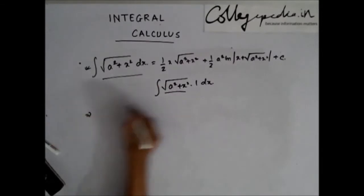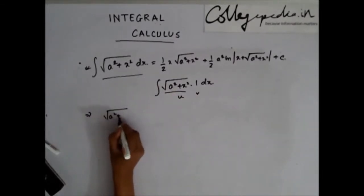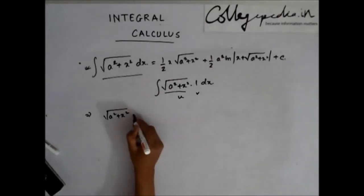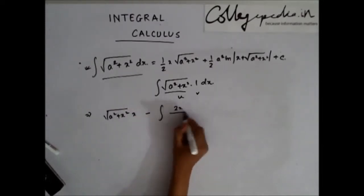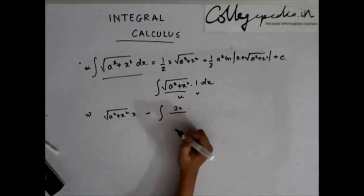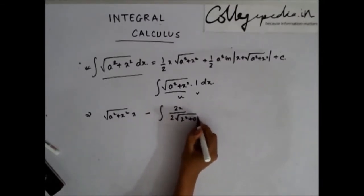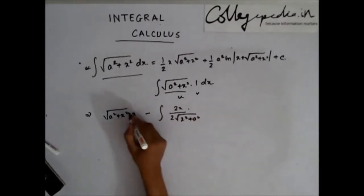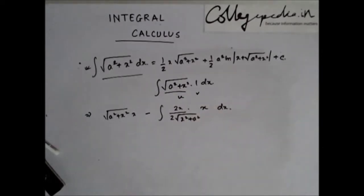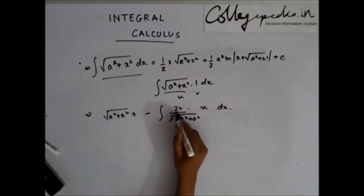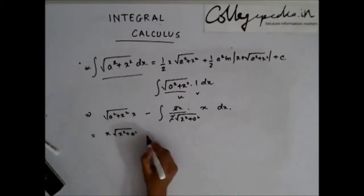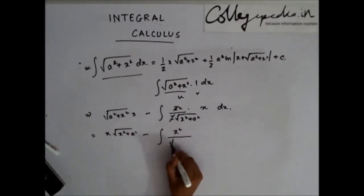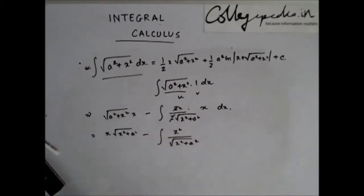We can write this as: u = √(a²+x²) and v = 1. So applying integration by parts: √(a²+x²) · x minus the integral of — differentiating √(a²+x²) gives 2x / 2√(a²+x²) — so we get x·√(a²+x²) minus the integral of x²/√(x²+a²) dx. The 2s cancel.